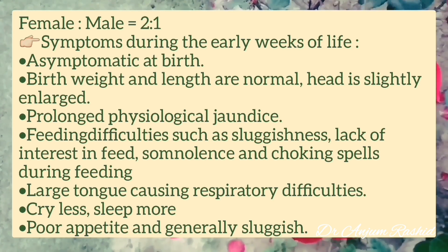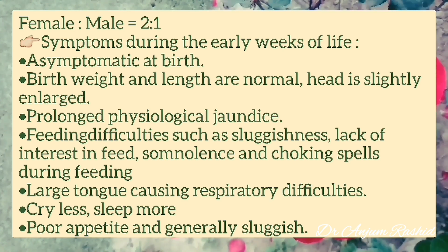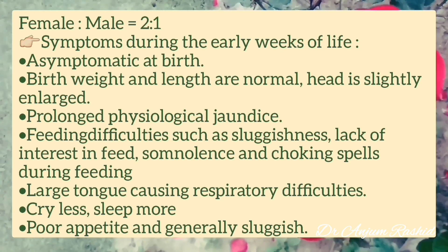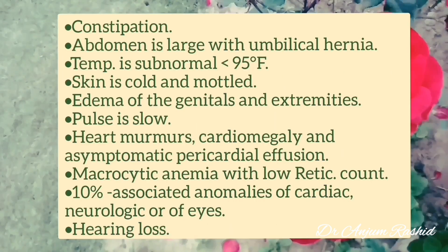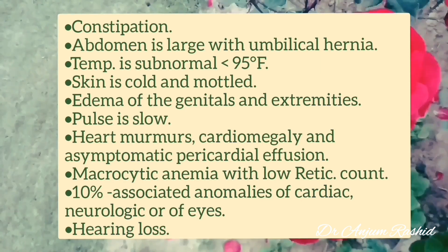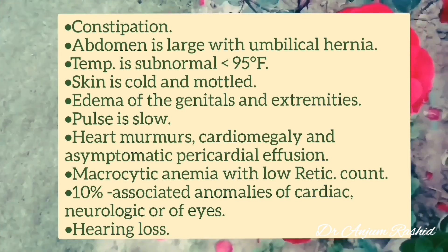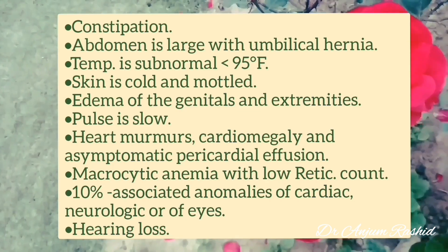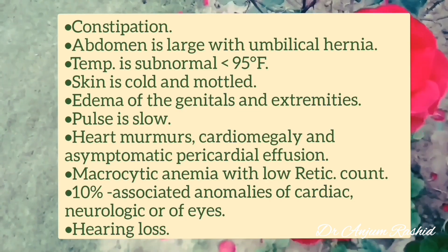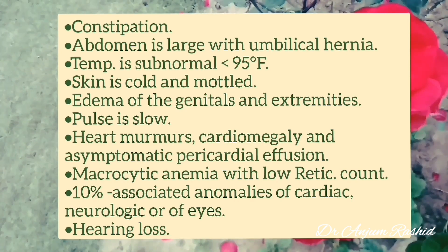There may be somnolence and choking spells during feeding. There is a large tongue which can cause respiratory difficulties. The baby cries less and sleeps more. There is poor appetite and general sluggishness. There may be constipation, and the abdomen is large with umbilical hernia. Temperature is abnormally low — less than 95°F — and skin is cold and mottled.